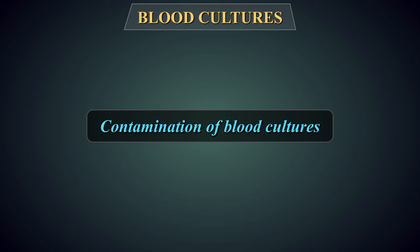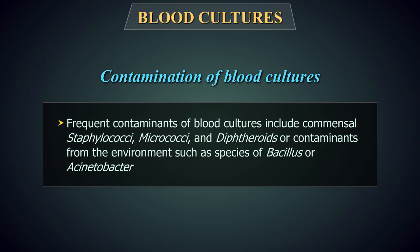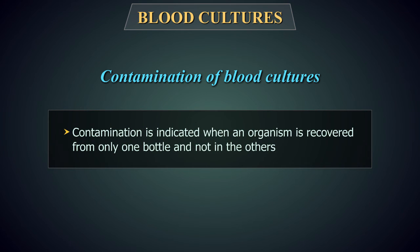Contamination of Blood Cultures: Contamination can occur when an aseptic technique is not used at the time of blood collection or at a later stage while subculturing. Frequent contaminants include commensal staphylococci, micrococci, and diphtheroids, or environmental contaminants such as species of Bacillus or Acinetobacter. Contamination is indicated when an organism is recovered from only one bottle and not the others, or when a mixed microbial flora is isolated.